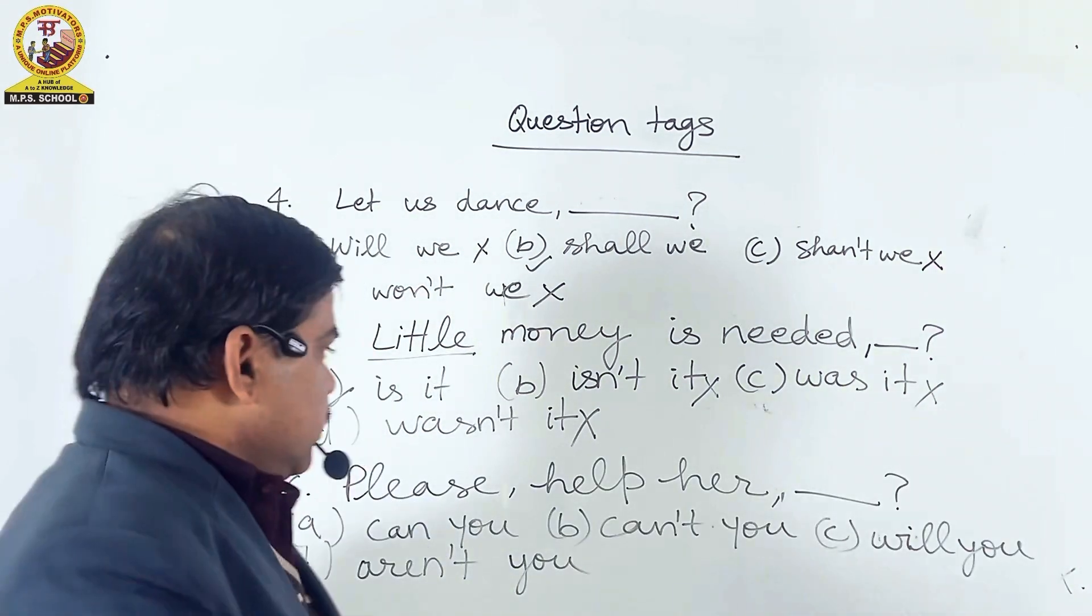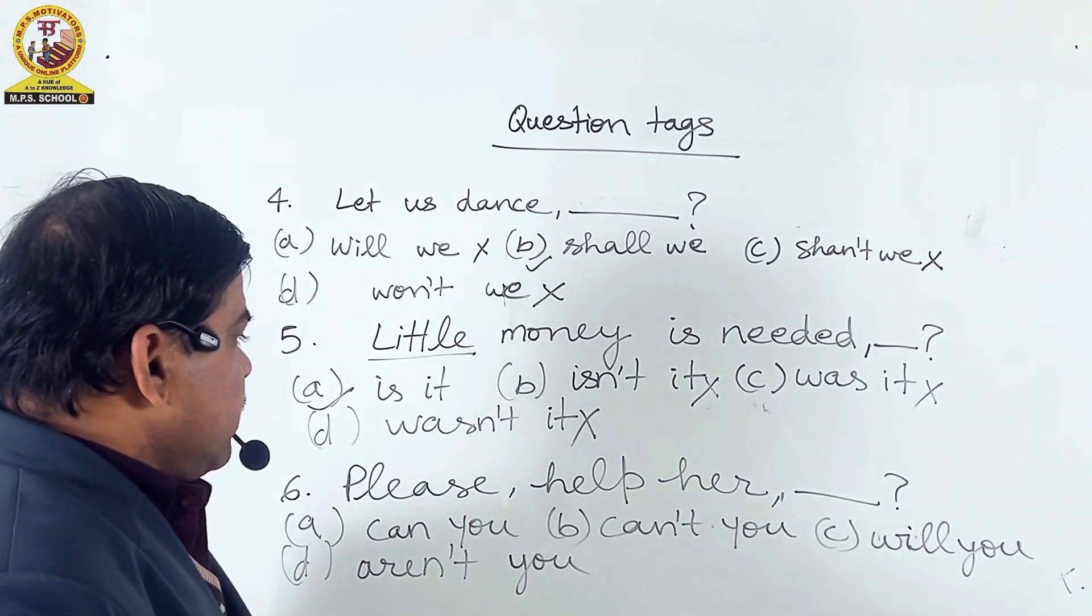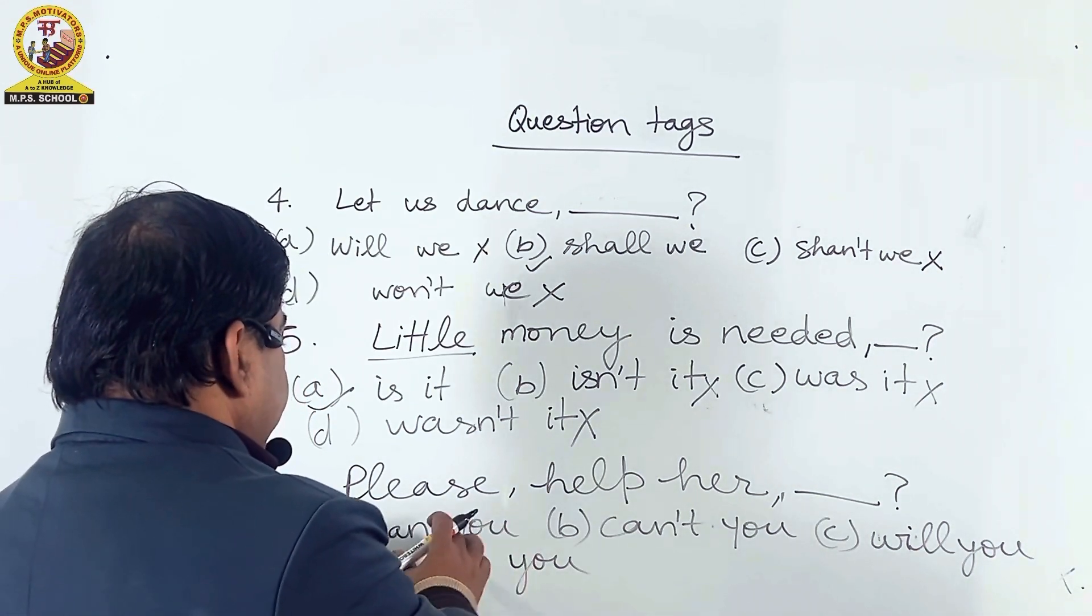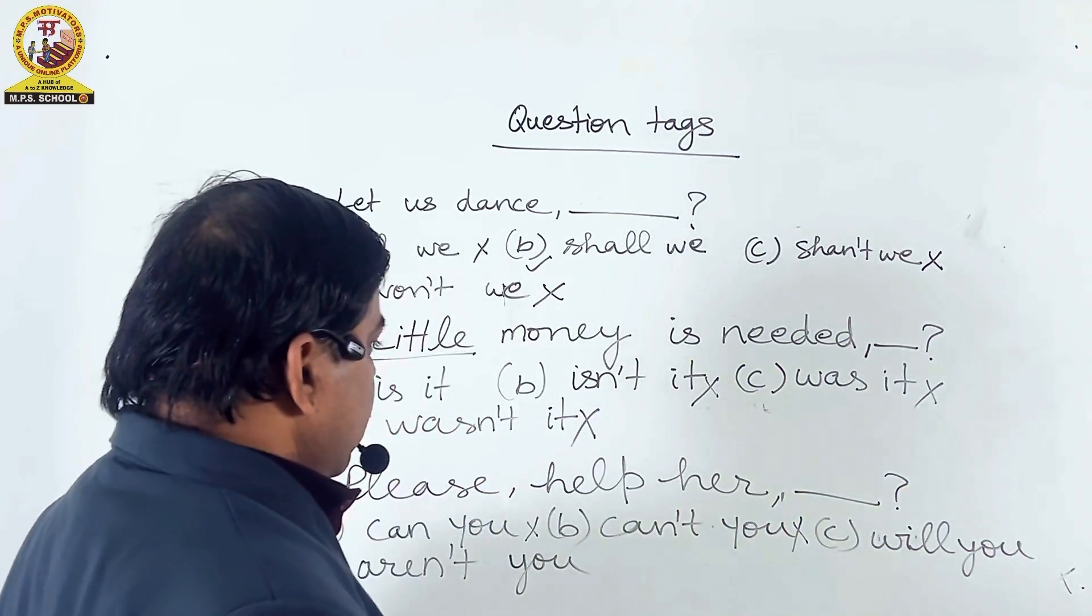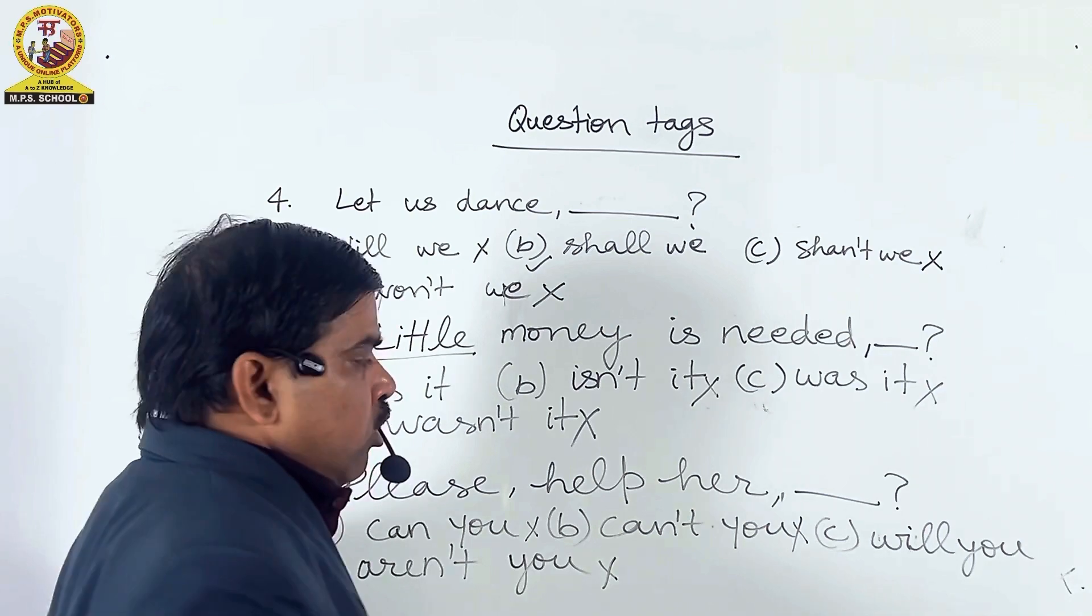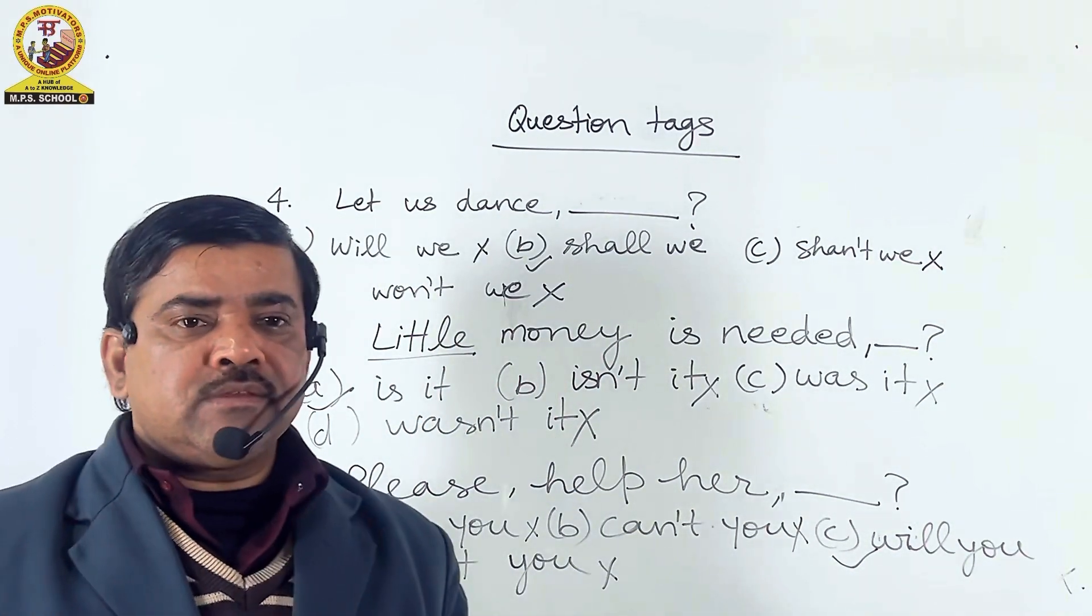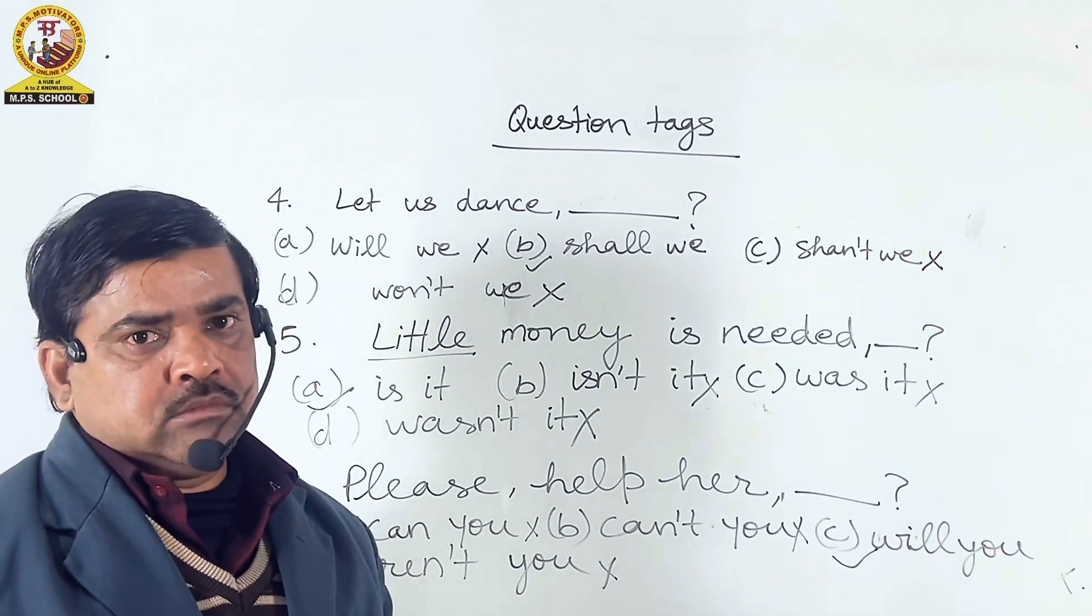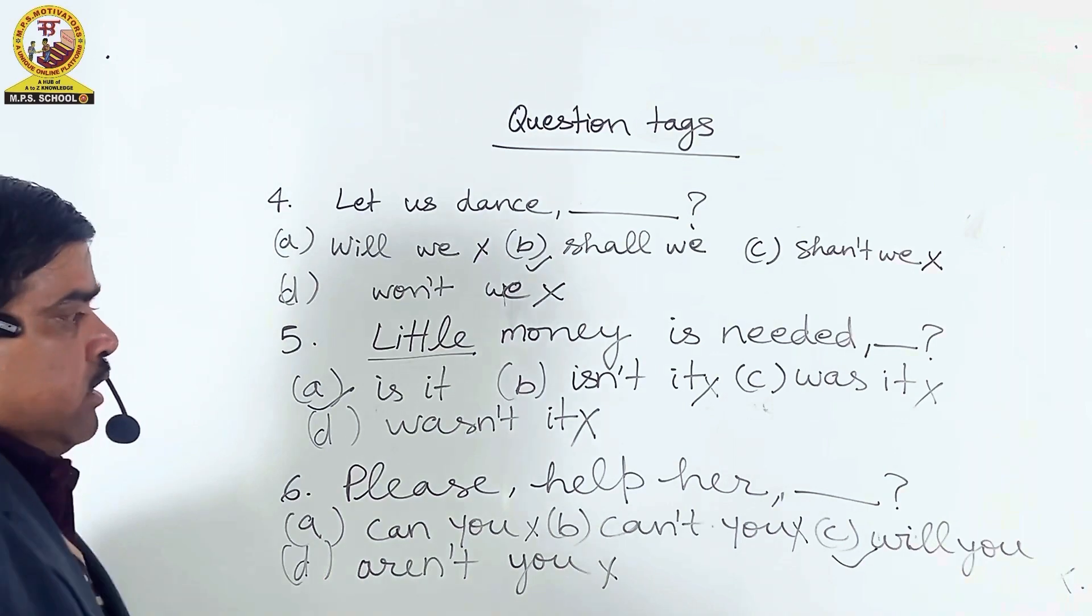Friends, our sixth question is: Please help her. So the question tag of this is not possible. If we use can you, it will be the wrong option. Can't you will also be the wrong option. If we use aren't you, it will also be the wrong option. So the right option is will you. If we use please in an imperative sentence, we use the positive question tag. Will you will be the right option. Now you can take a screenshot.